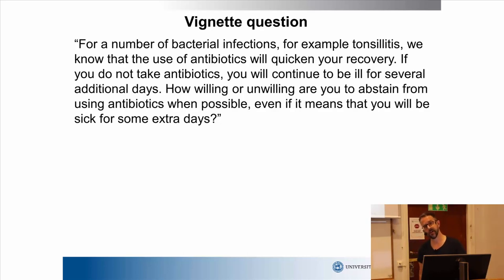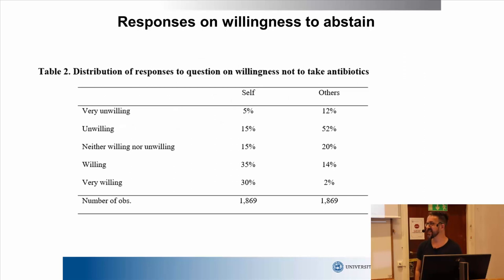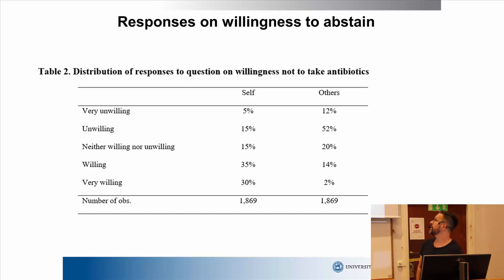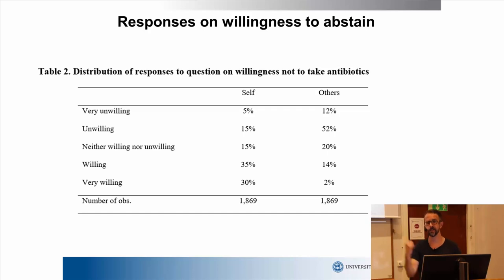We then asked the same people what they think others would do — the same vignette question, but how do they think others would respond. When answering for themselves, 5% said they were not willing to abstain from antibiotics, and 30% said they were very willing to abstain. But when asked what others would do, only 2% thought others would be very willing to abstain, while 12% thought others would be very unwilling. So there's a pretty big difference between what I think I would do and what I think others would do — I'm a much better person, so I would abstain, but they would not. That's the general impression people have.